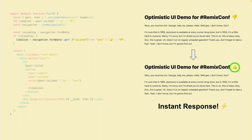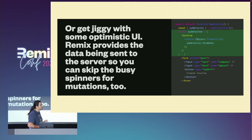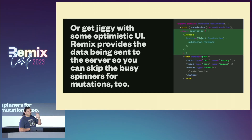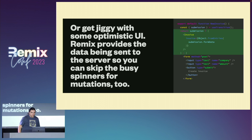Now we're going to see a second example — it's a very quick one. This is taken from the Remix website. It's a bit more complex. We have a form to create an invoice. When we click Create, we display the final result immediately with the data that we already had from the form. I love that this is on the Remix website, by the way.